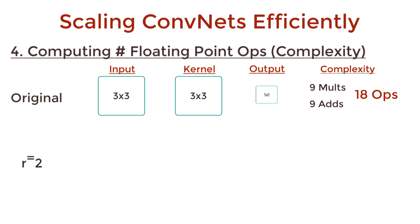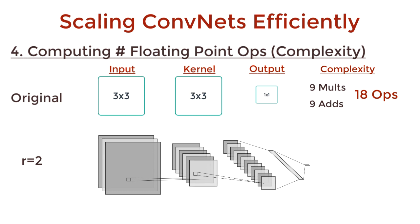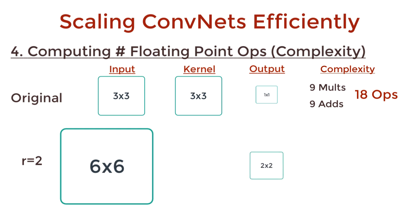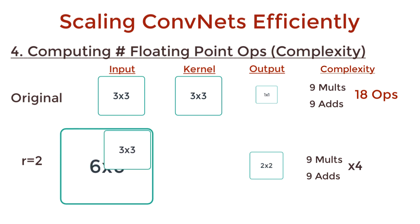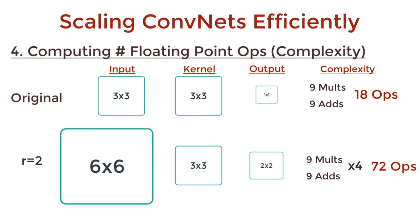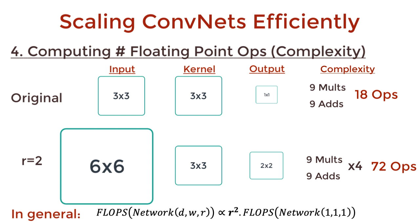Case 3: what happens if we double the resolution of every layer? This means doubling the length and breadth of every layer. If resolution increases two-fold, the input would be of shape 6×6 and the output needs to be of shape 2×2. We can achieve this by convolving with a 3×3 kernel with a stride of 3. Each convolution operation requires 18 floating point operations, but we need to perform this four times to get the 2×2 output. So doubling the resolution increases FLOPs by four times, and increasing resolution three-fold increases FLOPs nine times. Therefore, the complexity of the scaled network is proportional to R² times the complexity of the original base network.